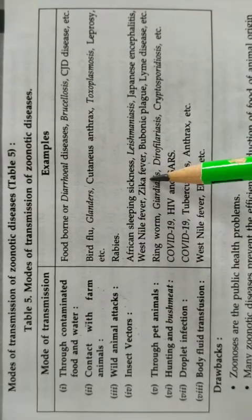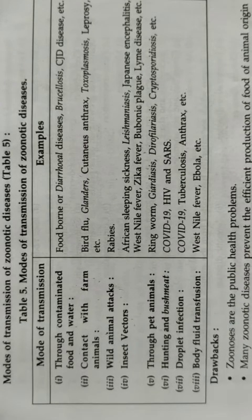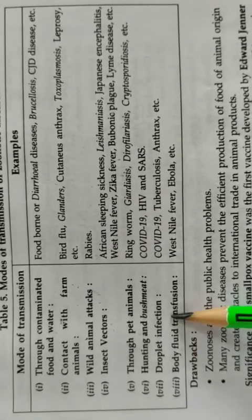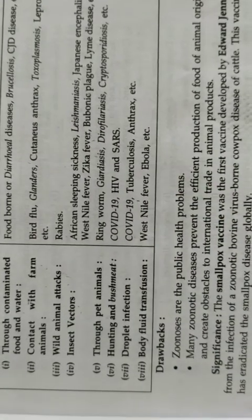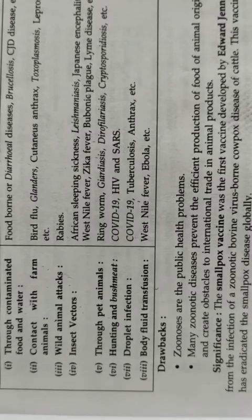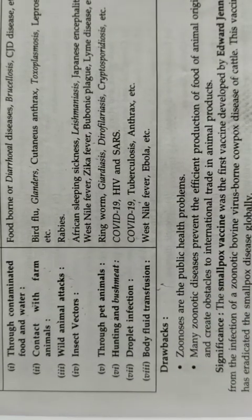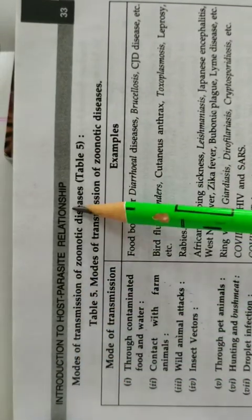Through pet animals, we can get ringworms and giardiasis. Next is droplet infection — we know COVID-19 is a droplet infection. Next is body fluid transmission — West Nile fever and Ebola virus fever are examples of body fluid transmission. So this is all about our chapter — the introduction to the host-parasite relationship.